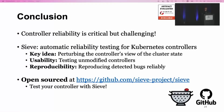To conclude, controller reliability is critical but challenging. These controllers manage your data center infrastructures and cloud systems, and they have to safely drive the system to the desired state in the face of faults, network issues, concurrency, staleness, and so on. We present SIEVE, an automatic reliability testing tool for Kubernetes controllers. The key idea is to perturb the controller's view of the cluster state to effectively trigger bugs. SIEVE is highly usable, can reliably reproduce bugs, is open source on GitHub, and we encourage you to try testing your controller with SIEVE. Thank you.